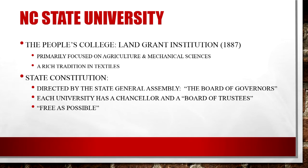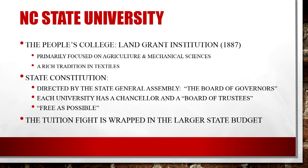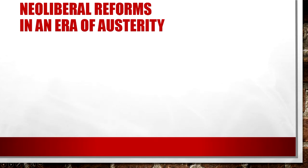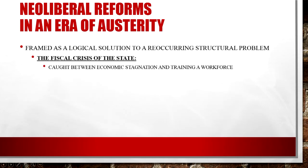Cost aside, the larger tuition issue is directly tied to the state budget. Each and every year, predictable as the seasons, comes the crisis of education. In the era of austerity, education has been declared a private good and not worthy of state spending. The fiscal crisis of the state affects all levels of education on a reoccurring basis.